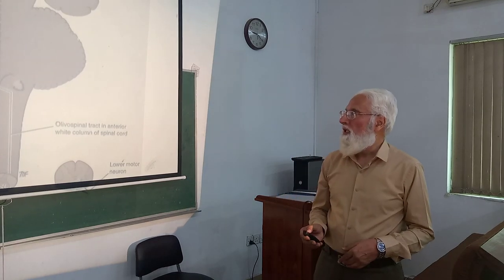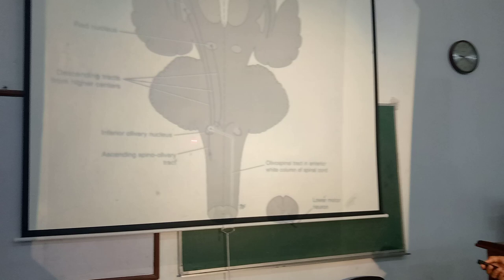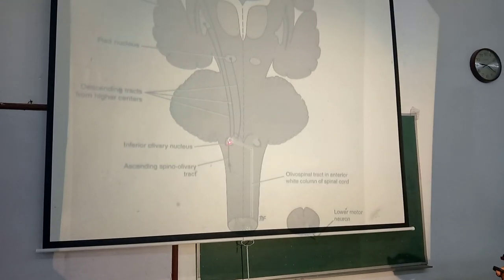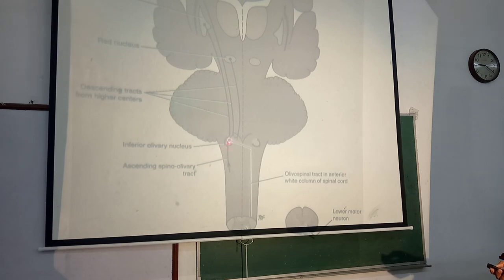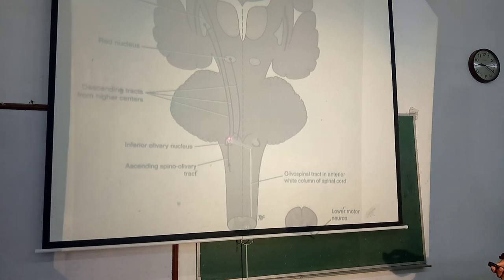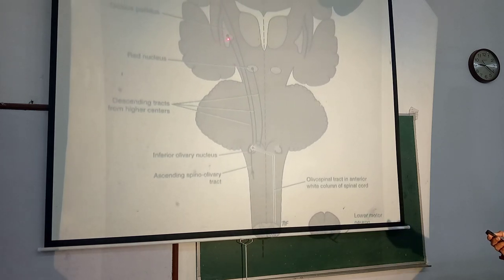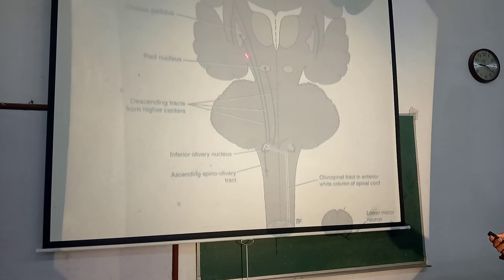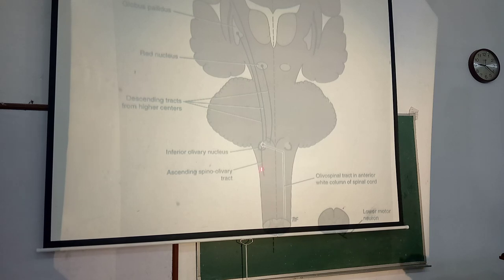Today we discuss the olivospinal tract. It originates from the inferior olivary nucleus in the medulla. The inferior olivary nucleus receives impulses from the cerebral cortex, corpus striatum, basal ganglia, red nucleus, and also from the spinal cord.